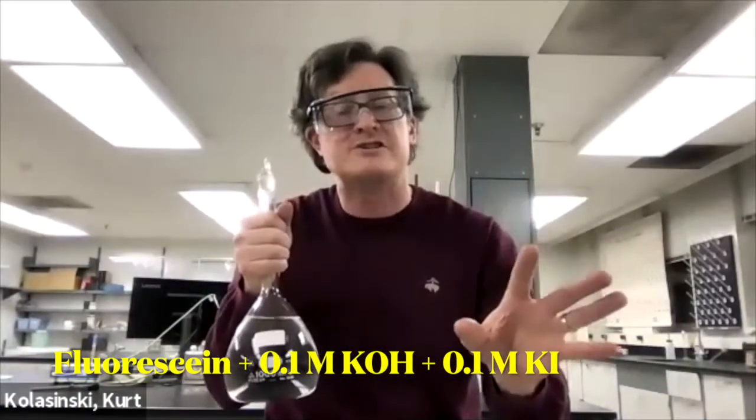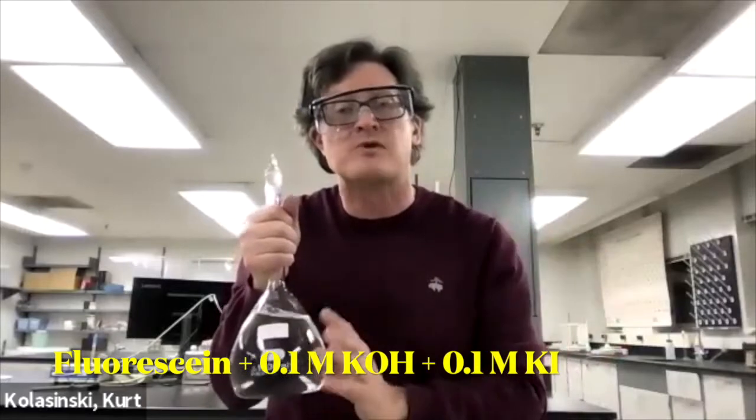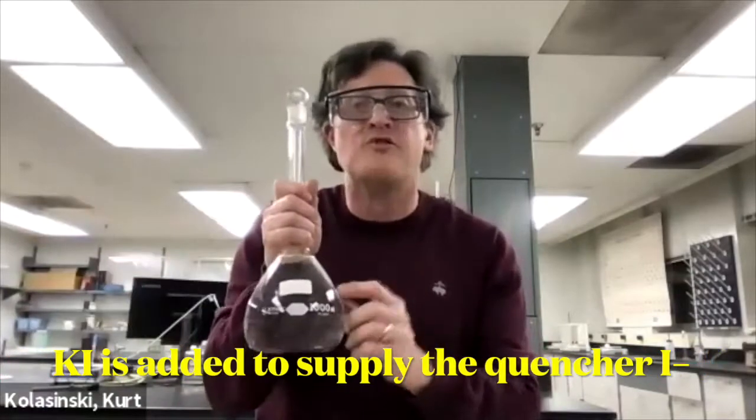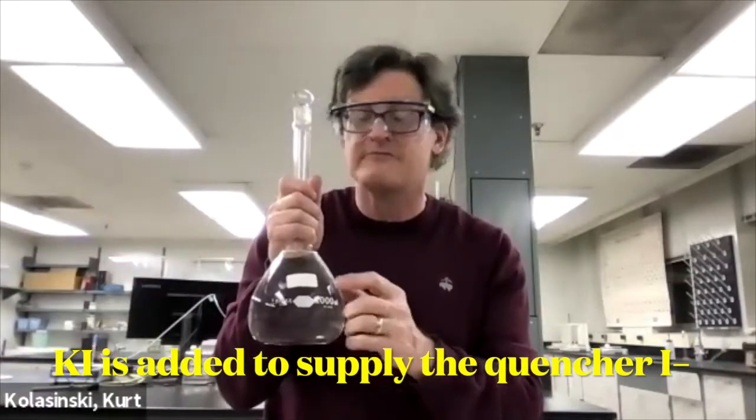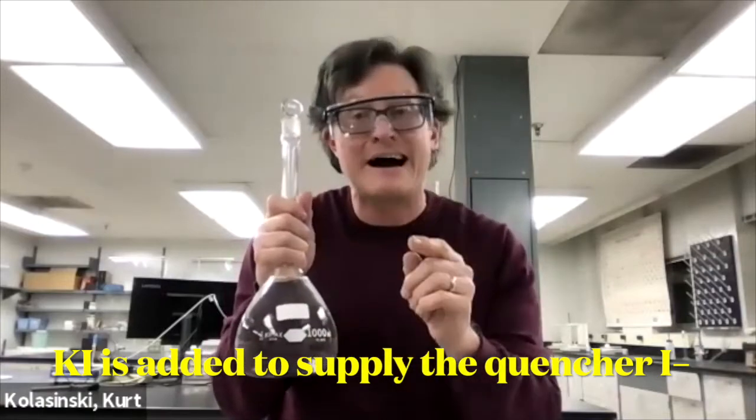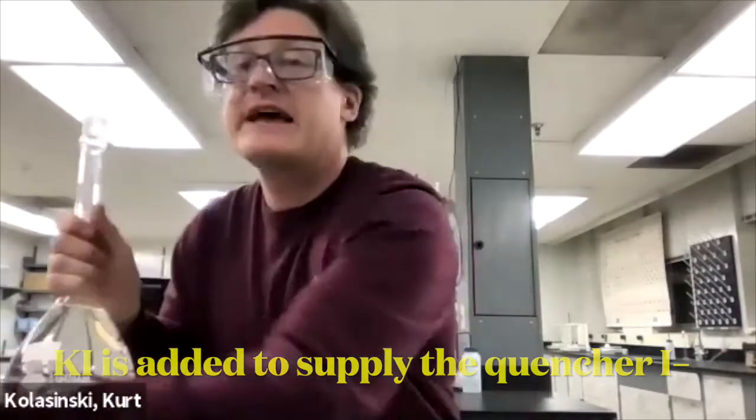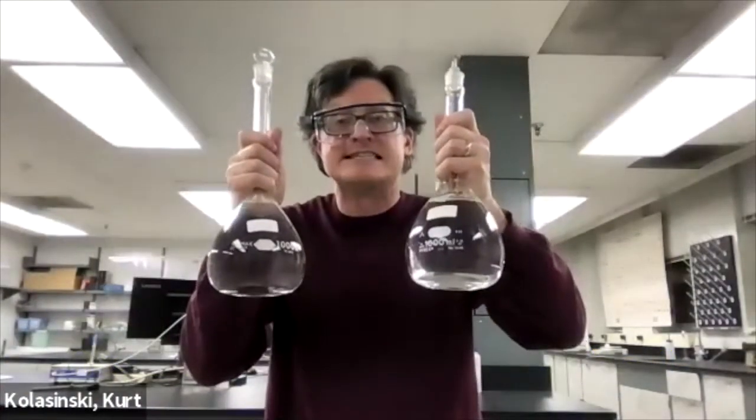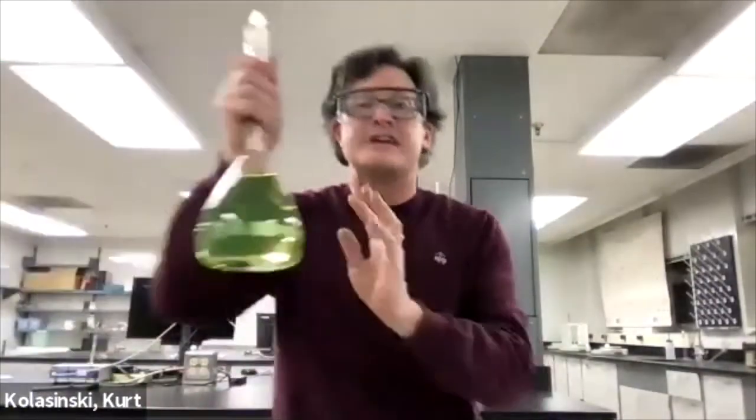Turns out the fluorescence depends on the pH. We need to control the pH. We're going to make this basic pH with 0.1 molar KOH. We're going to keep the K plus and the OH minus concentration constant. So we're going to add varying amounts of 0.1 molar KOH with 0.1 molar KI.